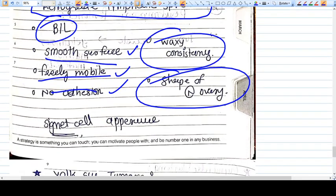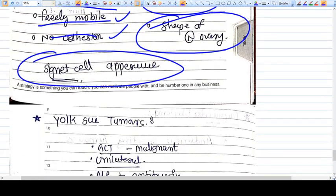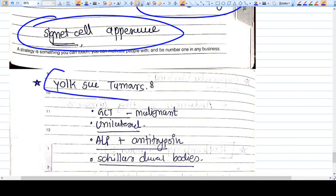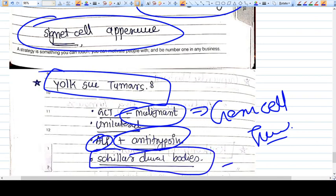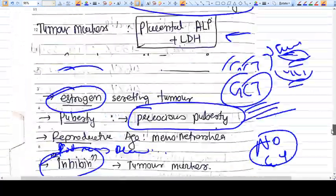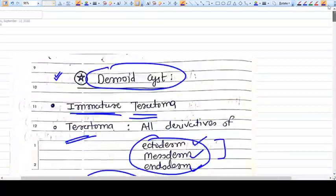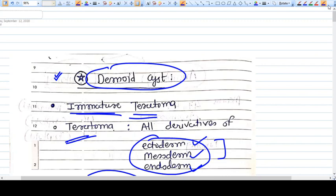Yolk sac tumor is basically a germ cell tumor. They are unilateral and highly malignant. ALP and AFP are the tumor markers. Schiller-Duval bodies are seen on histopathological examination. So far we've discussed almost all tumors commonly asked in ovarian tumors.